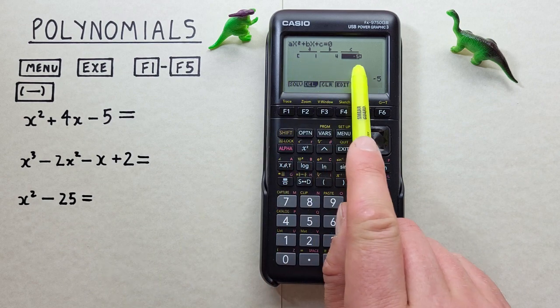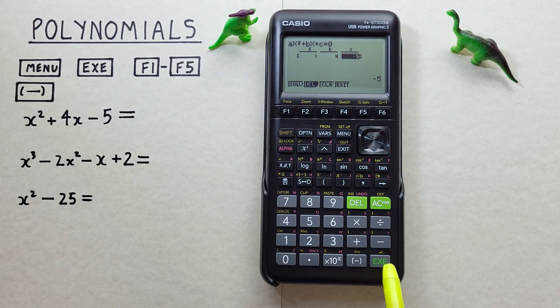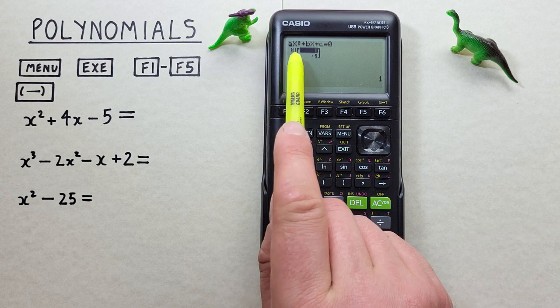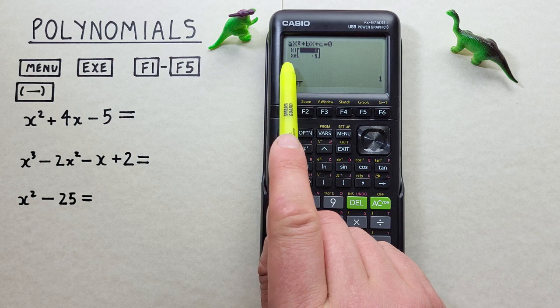So there we go, we've filled in all our blanks and now we can hit EXE again and we get our results. X is equal to 1 or X is equal to minus 5.